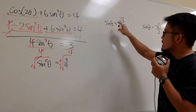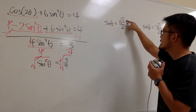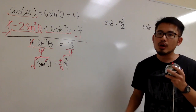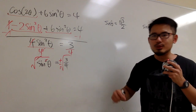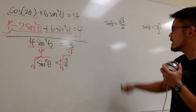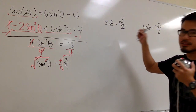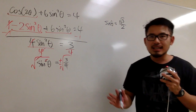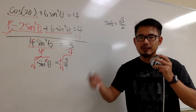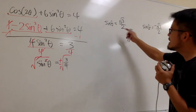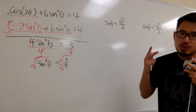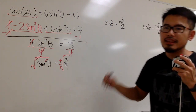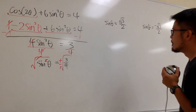Sine of what angle is equal to square root of 3 over 2? You have two ways to do it. One, you just memorize all the angles on the unit circle. But I would not recommend that. Instead, you can figure out the angle using the special right triangles — the ratios and the ratios of the sides. That's all.